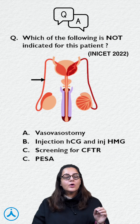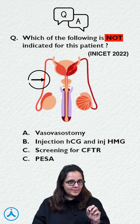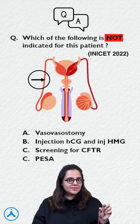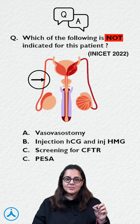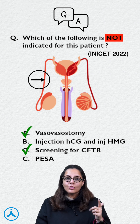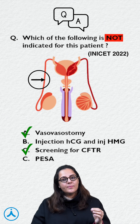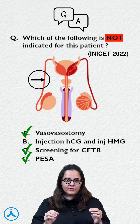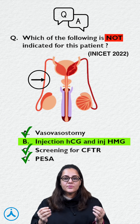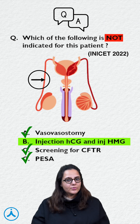Question number two: what are you not going to do in this patient? We can clearly see the block is at the post-testicular level. Vasovasostomy is removal of the blocked piece of the vas deferens and joining the two viable ends, so we can do that. Screening of CFTR will give us a clue about cystic fibrosis and bilateral absence of vas deferens. Injection HMG and HCG we are not going to give, because in these patients spermatogenesis is already complete and there is no problem with hormone levels.